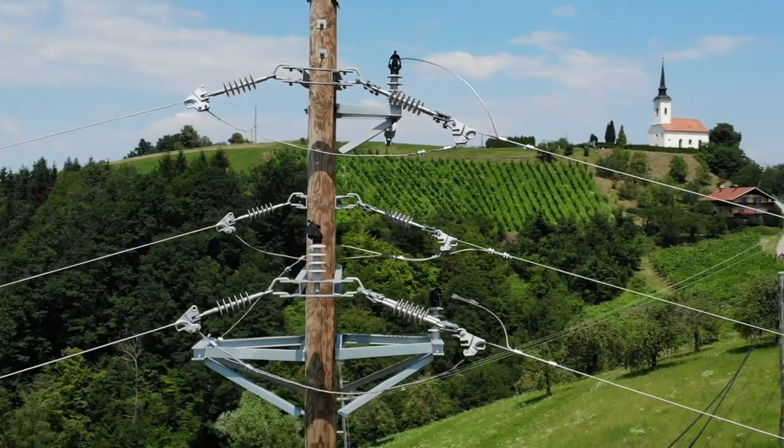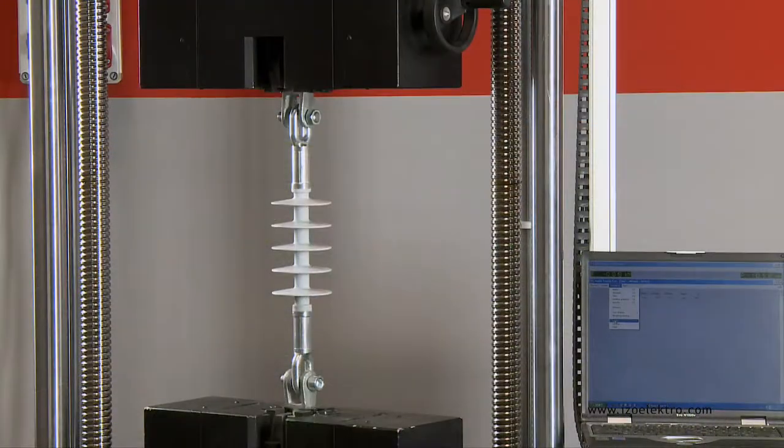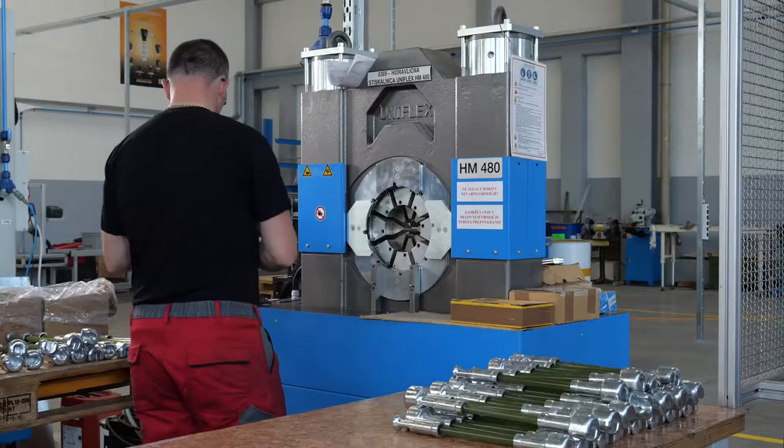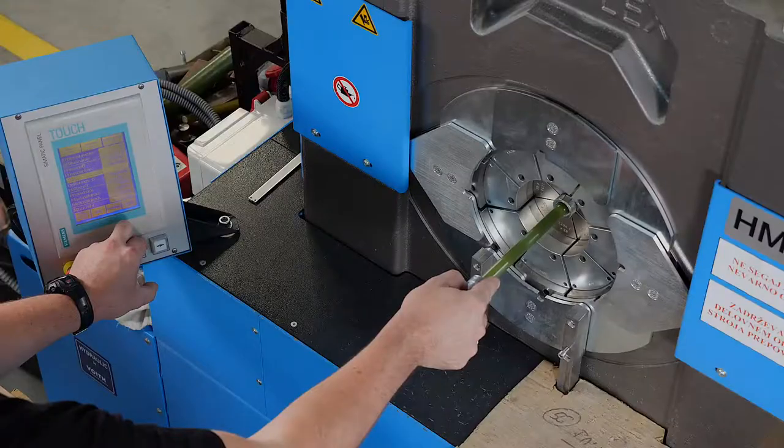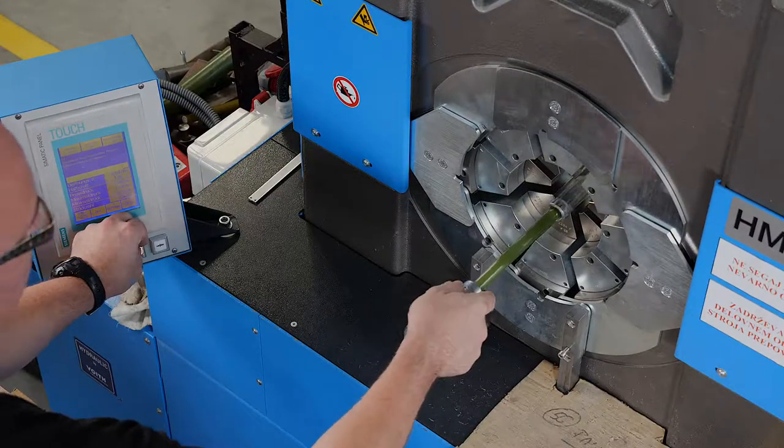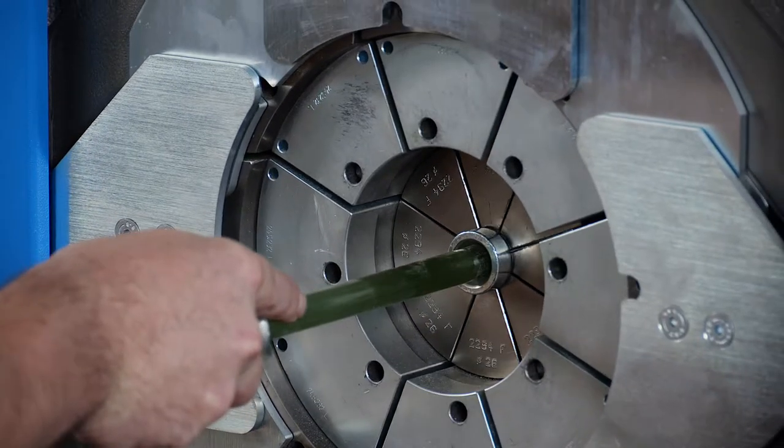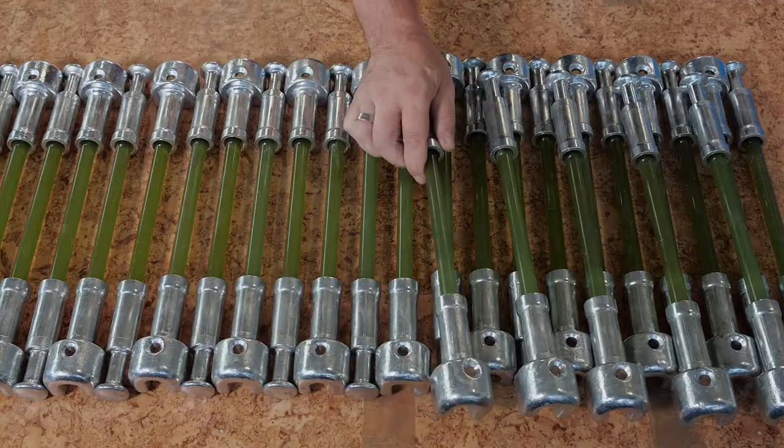Our array of products also encompasses tension composite insulators with a creepage distance of up to 1,200 millimeters. Particular attention in the manufacturing process is given to the pressing of metal fittings onto the epoxy rod of the insulator. A highly modern hydraulic machine with 8 pressing jaws and 3 different pressing modes is used for this purpose.